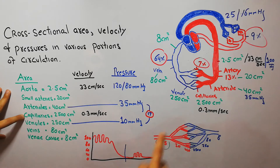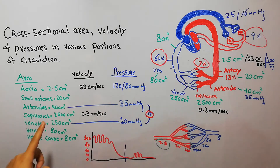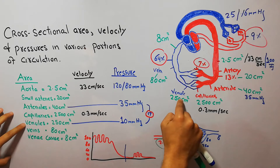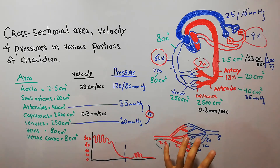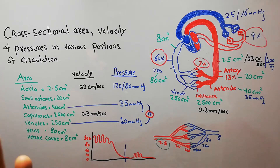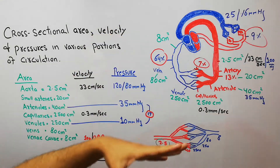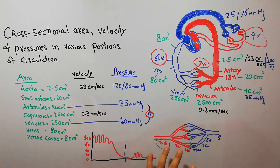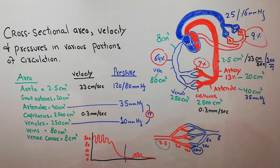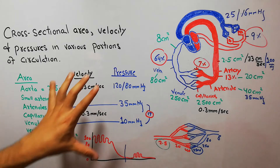The capillaries have a combined cross-sectional area of around 2500 centimeters squared. The venules have a combined cross-sectional area of around 250 centimeters squared. This diagram shows that when all arteries, arterioles, venules, veins, or capillaries are combined, the capillaries have the largest cross-sectional area of all.